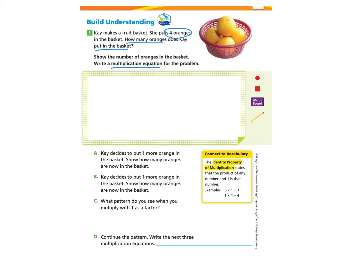If you would like to try this on your own, you may pause the video and come back. Otherwise, you can follow along with me. We're going to create a basket and put 4 oranges inside the basket. Then we're going to write the multiplication equation. There is 1 basket and 4 oranges in that basket. So we have 1 times 4, which makes 4.